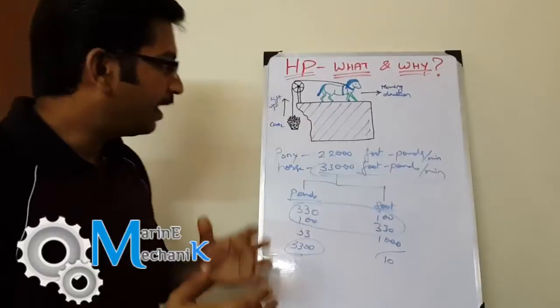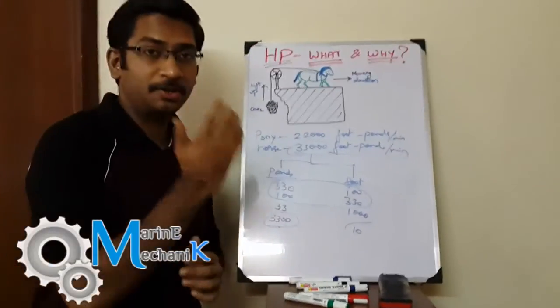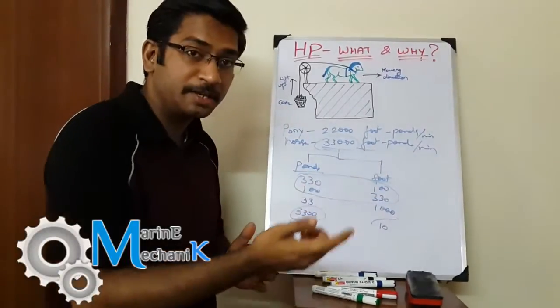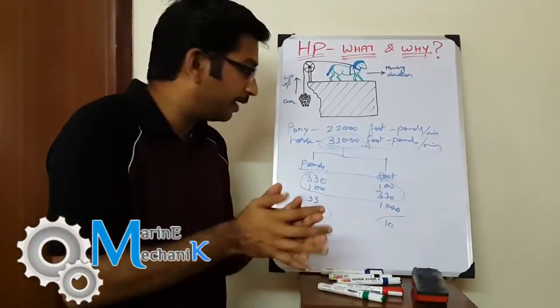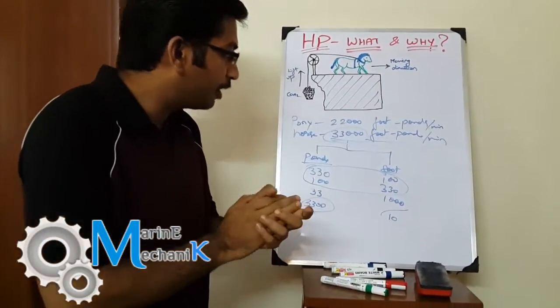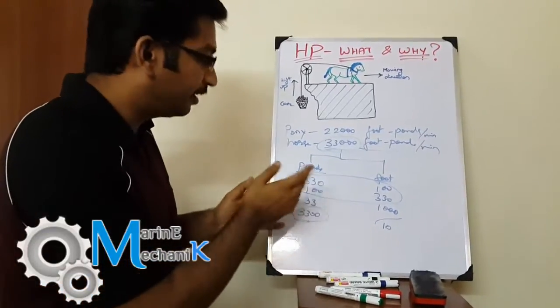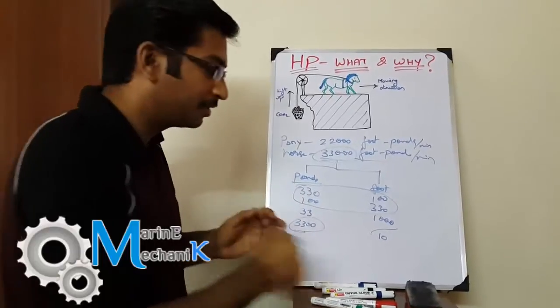So we have seen until now what is horsepower and what units they were using before James Watt's time. We've seen a rough calculation. Next is why James Watt did this.